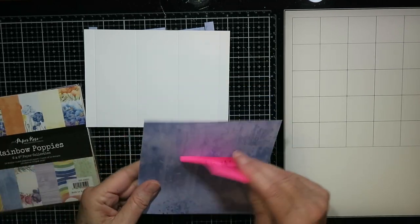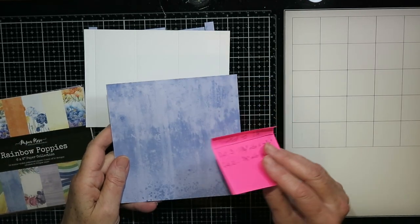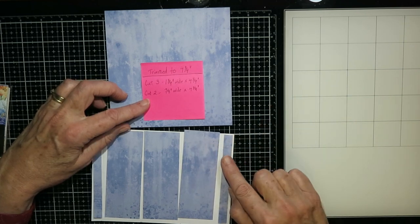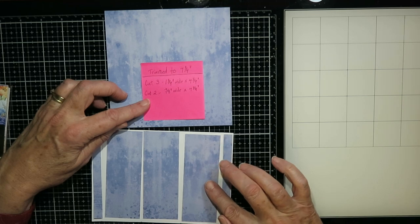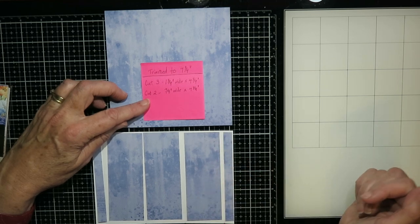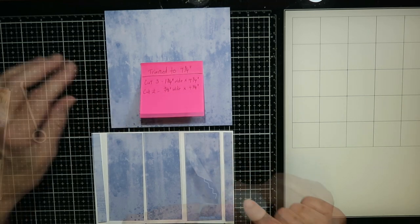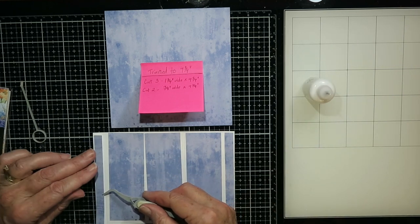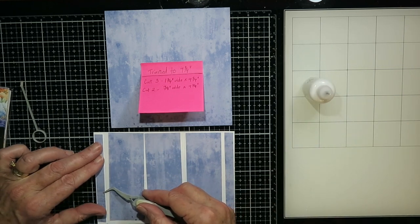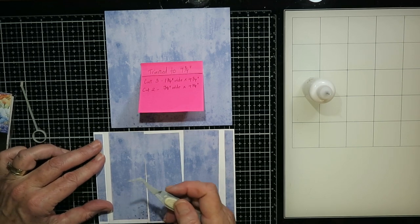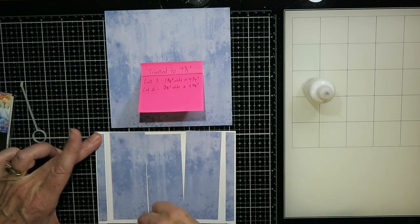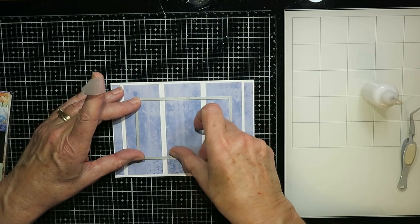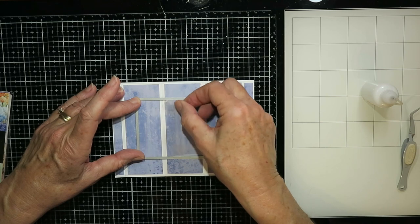I added on to it this rainbow poppies piece of cardstock. I trimmed it down to four and three quarter inches, and then the three panels I cut one and three quarter inches wide, and that small one is three eighths of an inch wide. They're all four and three quarter inches tall. And then I just glued those on before I cut out the window. That just seemed the easiest way to me. I know you end up with a little bit of wasted cardstock, but it just seemed easiest to position them this way.